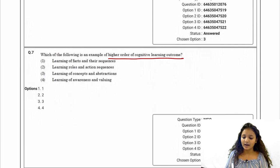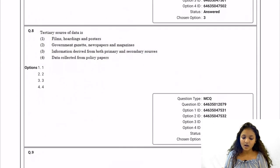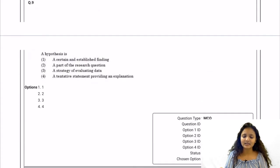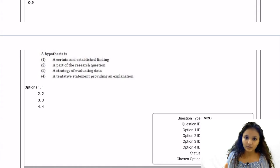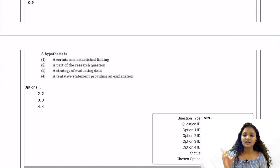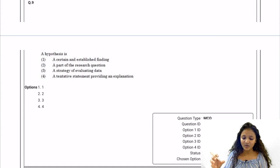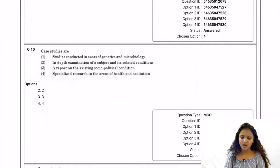Question 7: Which of the following is an example of a higher order cognitive learning outcome? Learning of concepts and abstractions is the correct answer. Question 8: Tertiary sources of data include primary and secondary sources, so option three is correct. Question 9: A hypothesis is basically a tentative statement which a researcher wishes to prove, and that tentative statement helps guide the research work.